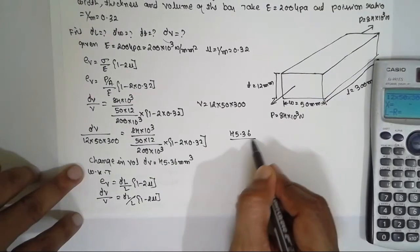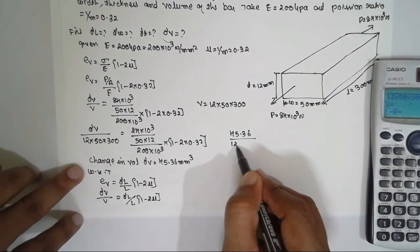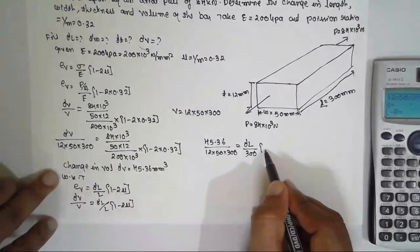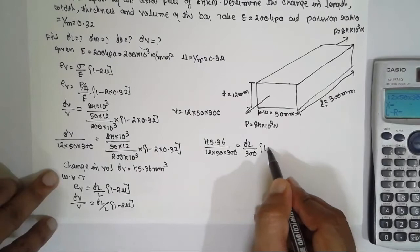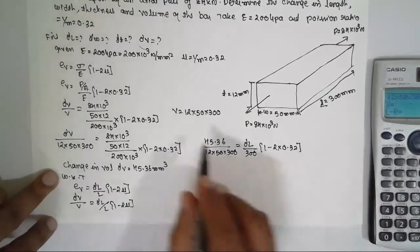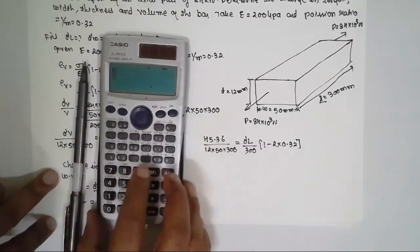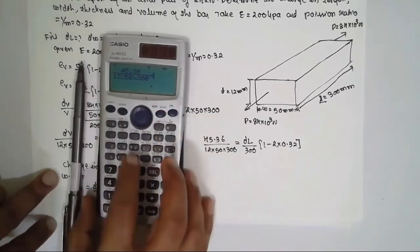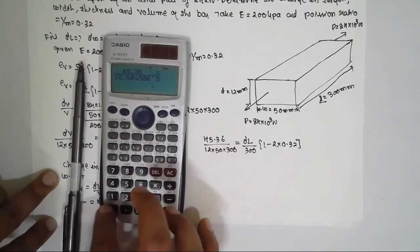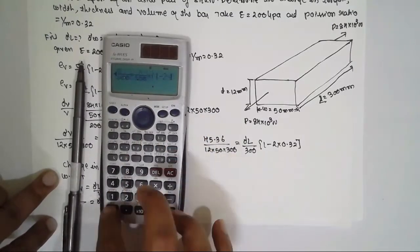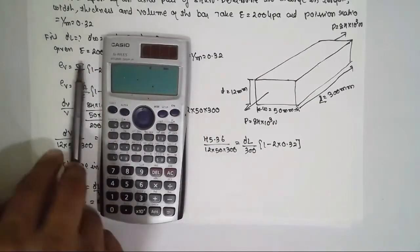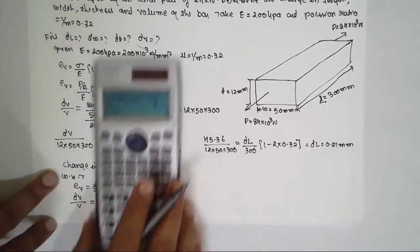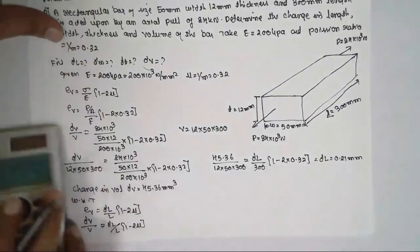Solving for ΔL using the calculator (SHIFT SOL), ΔL = 0.21 mm.